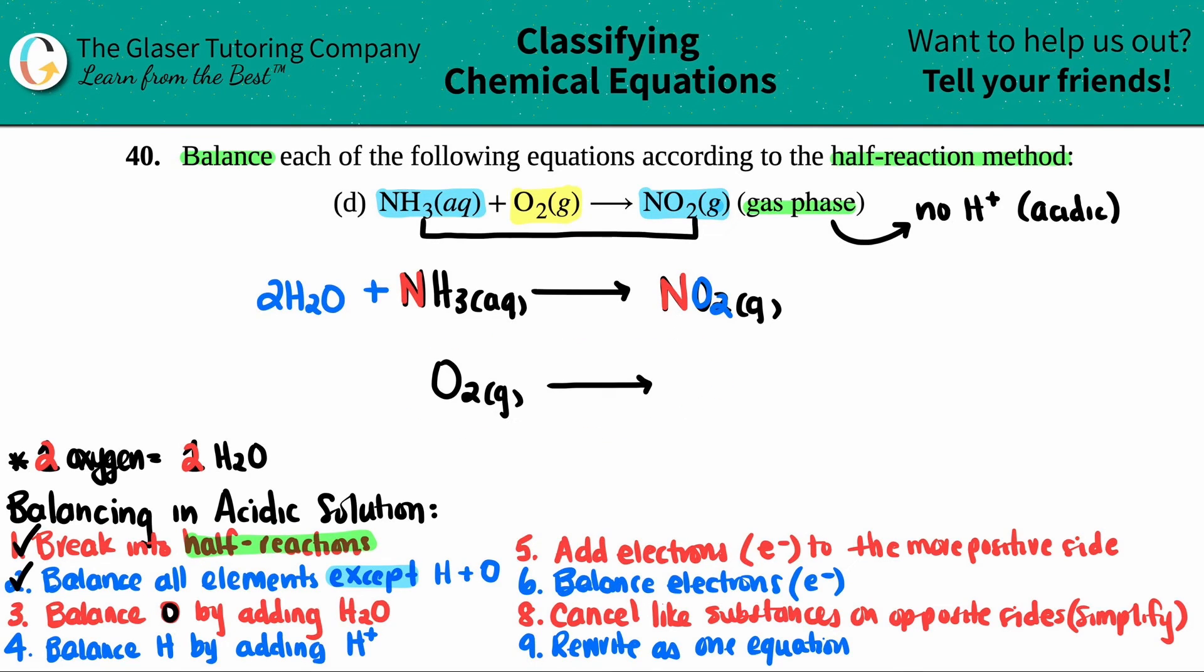Now let's work on the oxygen down here. I have an oxygen. I have two of them. I have two. I need two on this side. So two H2O. Look how easy that was. And you see now it has like a full-blown half reaction.